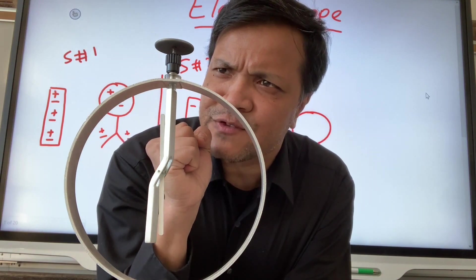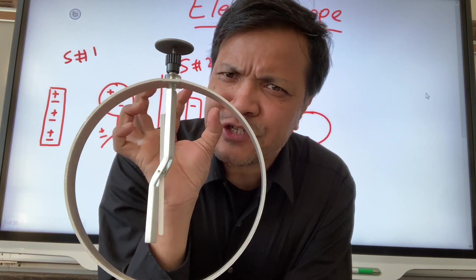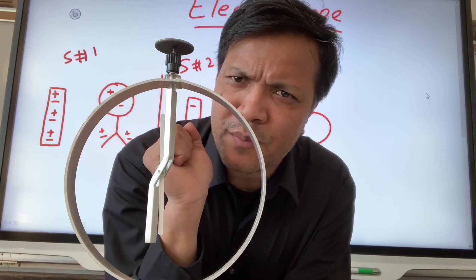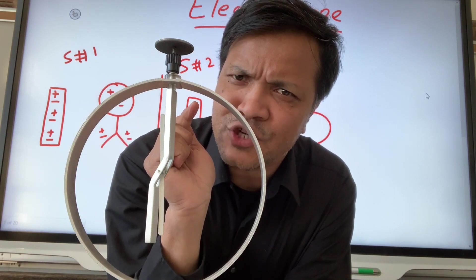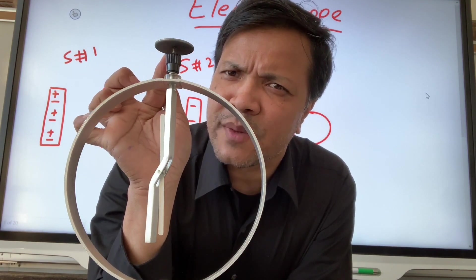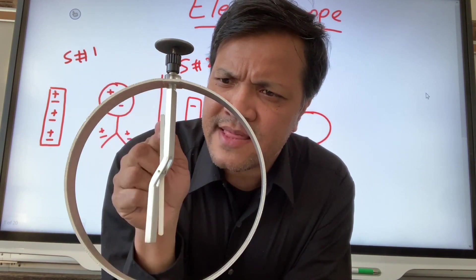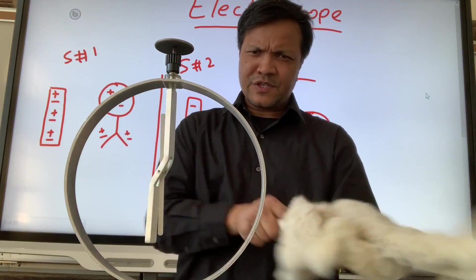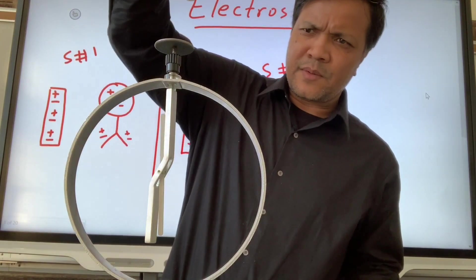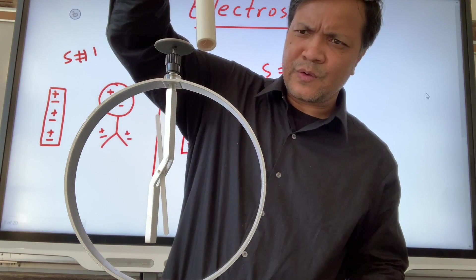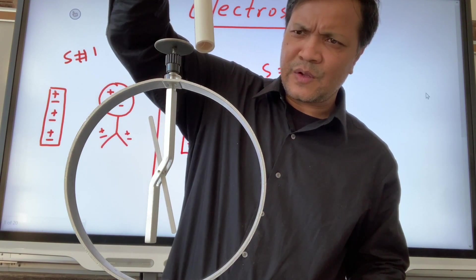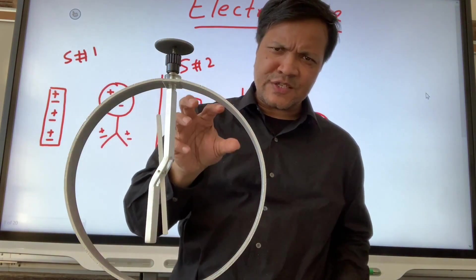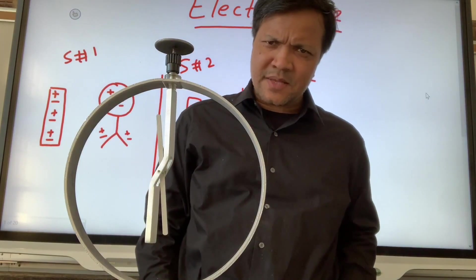There will be a redistribution of charges. The metal leaf will become negatively charged, and the top will become positively charged. Negative and negative repel, so they will repel each other. I did not touch it. This is called charging by induction.